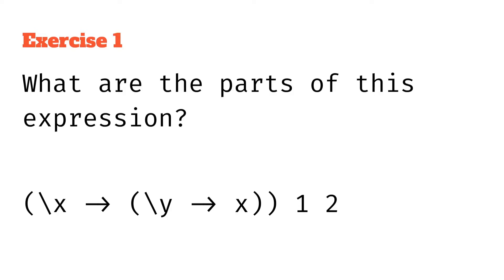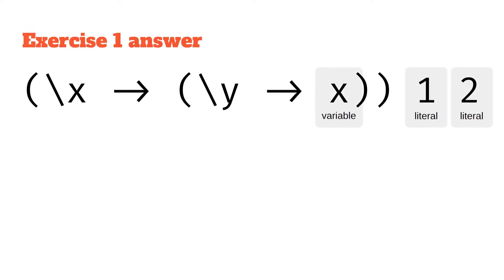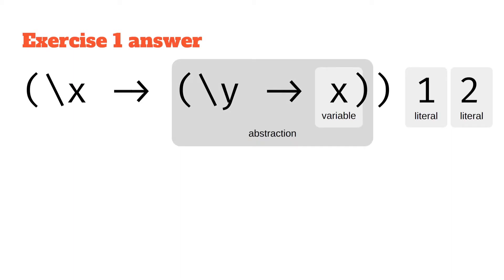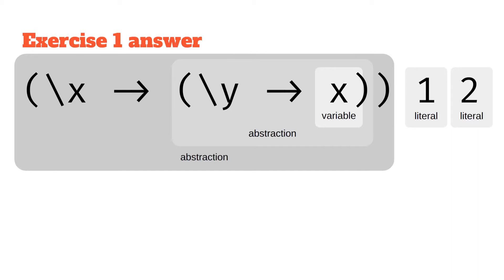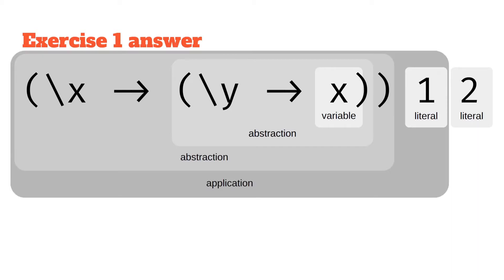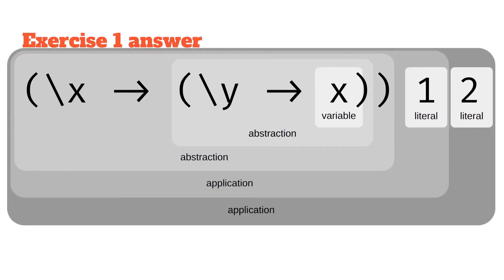So what are the parts of this next expression? We've got a function abstraction backslash x arrow, with another function abstraction inside backslash y arrow, and then a variable x inside that, plus a one and a two. We've got our x variable and our one and two literals, then a nested function abstraction containing x as the function body, then an outer function abstraction where x is bound. In our lambda calculus we apply one argument at a time, then add the second argument afterwards.